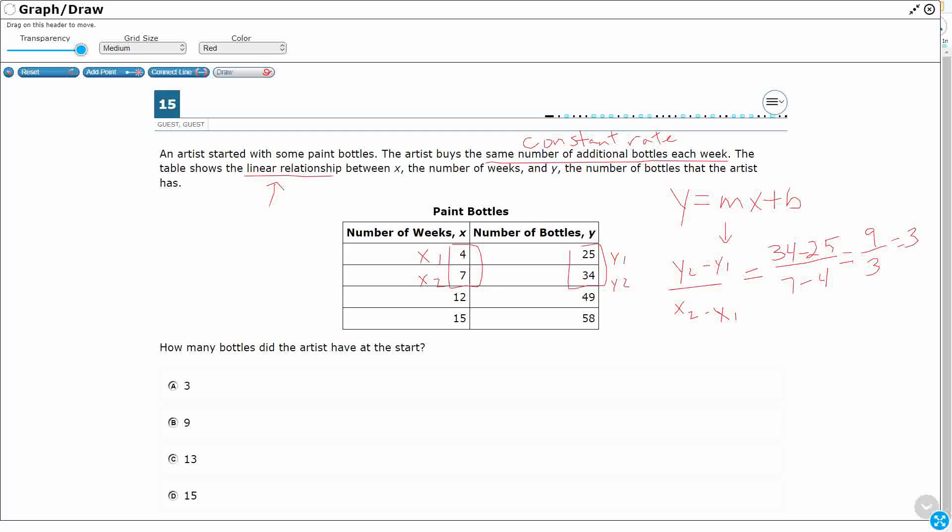Alright, so it goes 3 per week. Alright, that makes sense. Alright, so this is a plus 3 right here between 12 and 15. That means an additional 3 weeks. So that's a 3, 6, 9. There's your plus 9. Alright, so that's good. We have our slope.